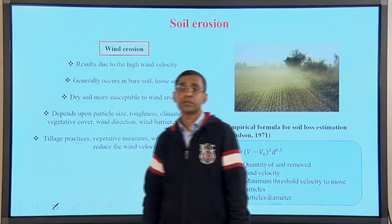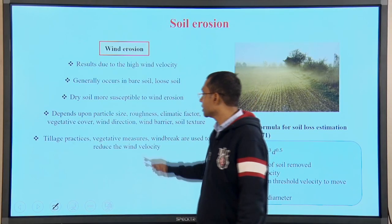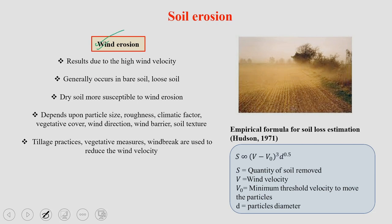Another important agent of soil erosion is wind. Strong wind resulting from high wind velocity causes soil erosion. A large proportion of topsoil is taken off from the land surface. This generally occurs in bare soil or wherever loose soils are available — dry soils are mostly susceptible to wind erosion. Wind erosion also depends on particle sizes and roughness; if more loose particles are present, soil loss by wind will be much higher. Sometimes at land surfaces, various cropping practices like tillage and land preparation can also aggravate soil erosion.